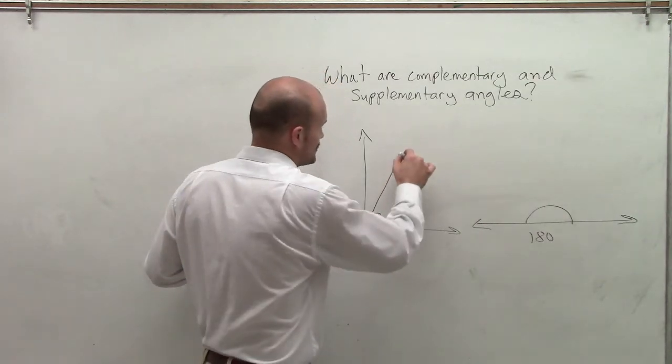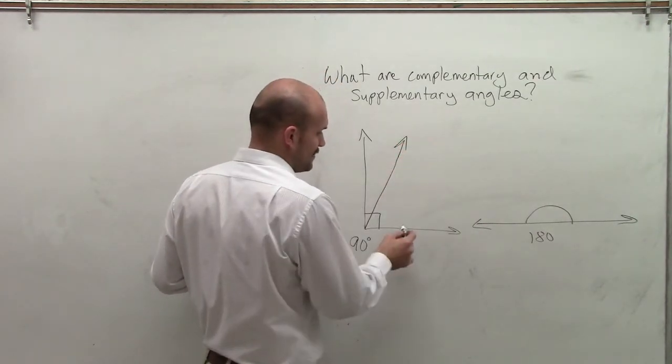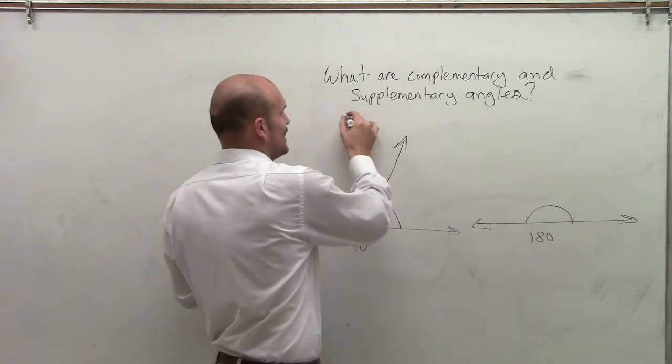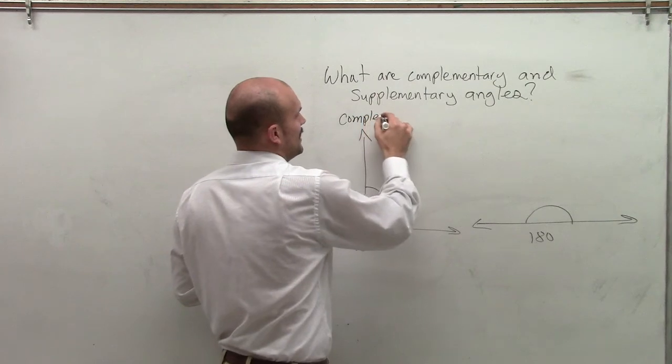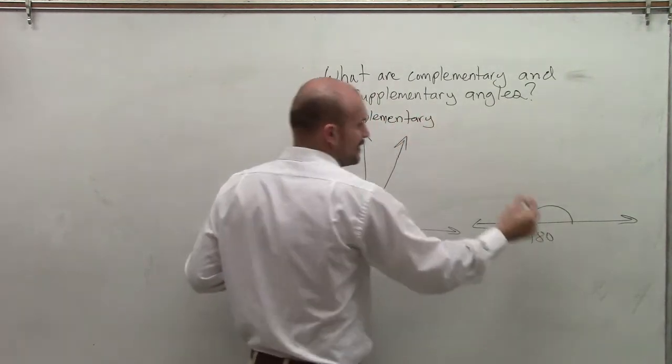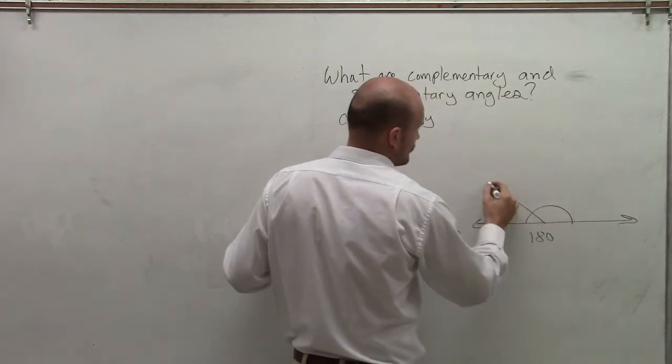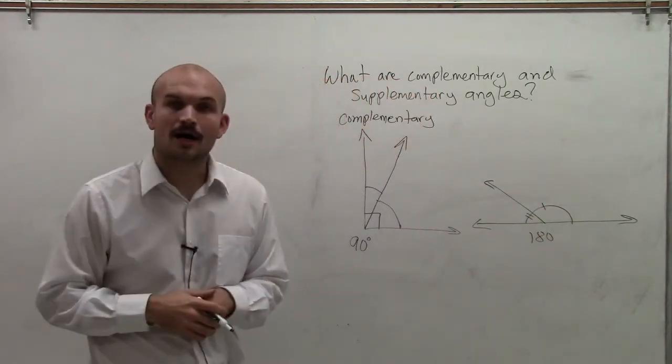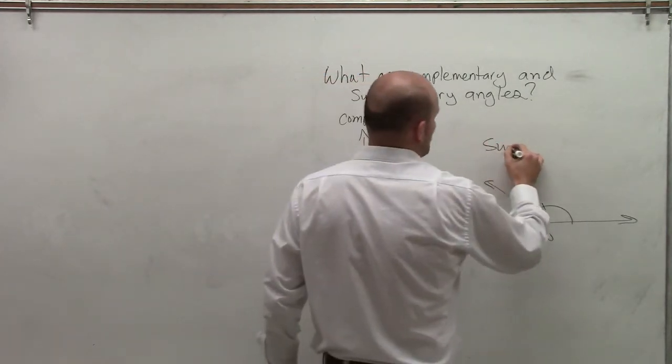So if you have two angles however I create them from here to here, those two angles add up to give me 90, which we say are complementary angles. And then if I have two angles here that add up to give me 180 degrees, we call those supplementary angles.